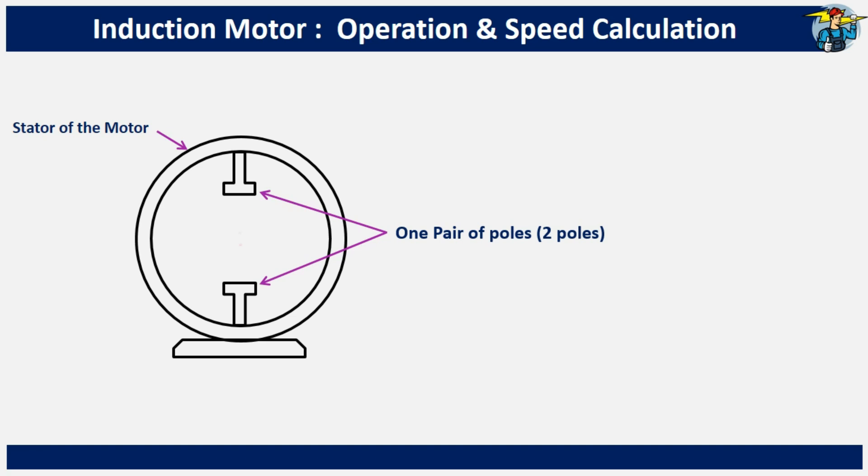These are called poles because when you wind the coil around them and let current flow through, they act as magnetic poles, creating a magnetic field around them.